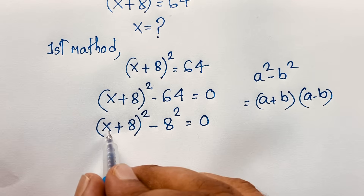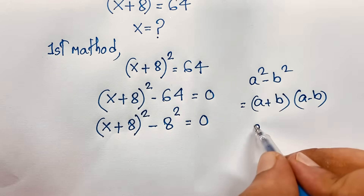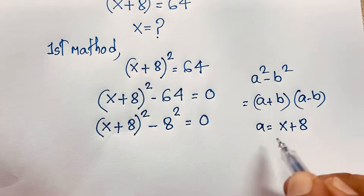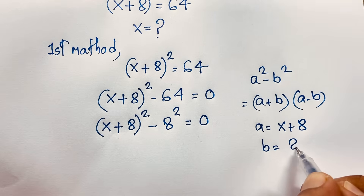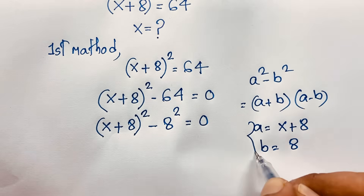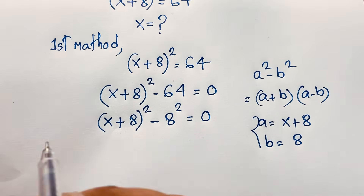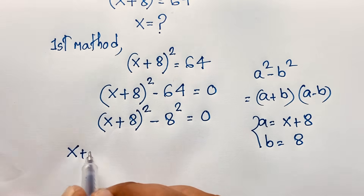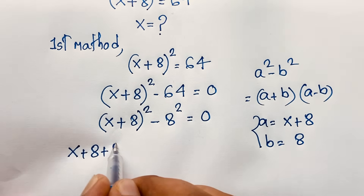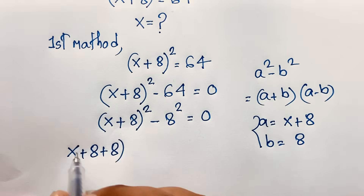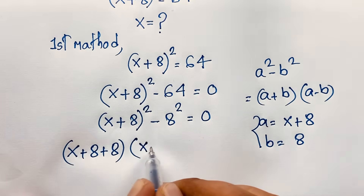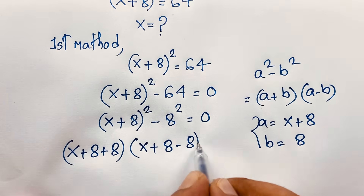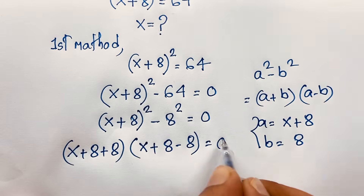Here a is (x + 8) and b is 8. So applying the formula, it will be (a + b) — where b is 8 — times (a − b) — where b is 8 — equals 0.